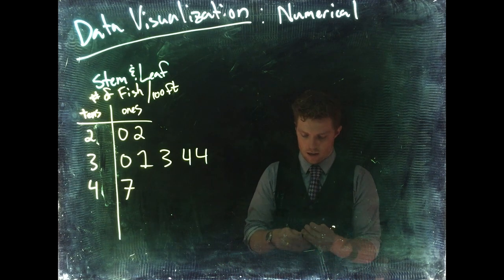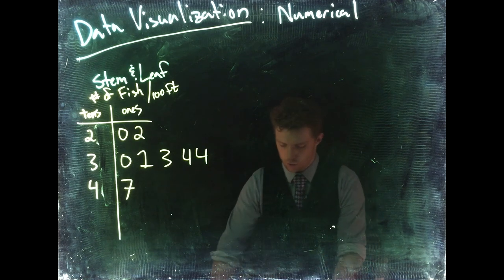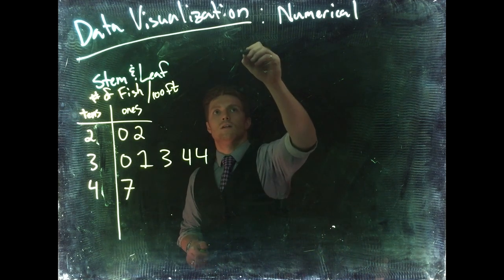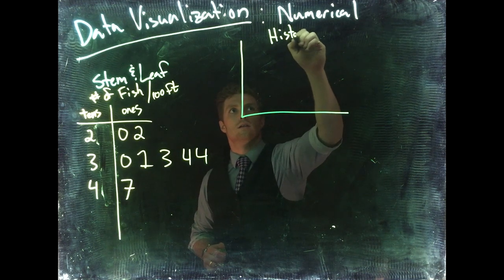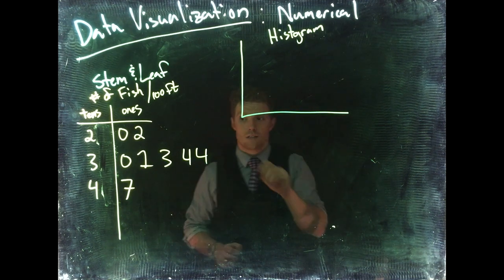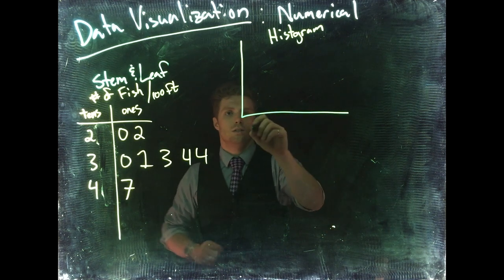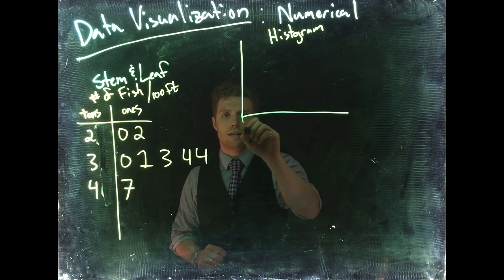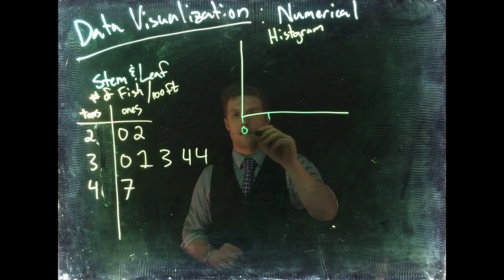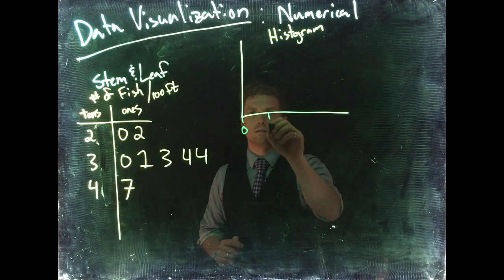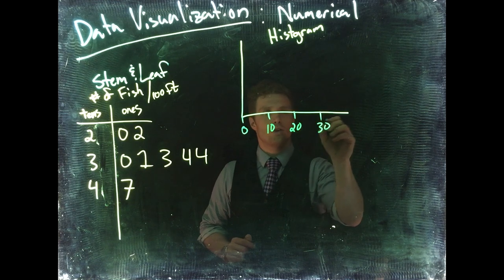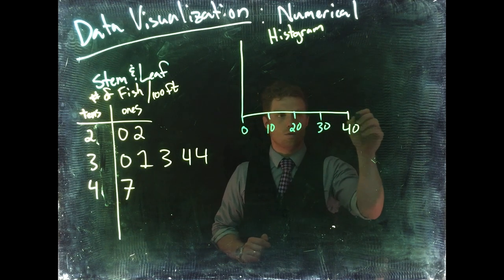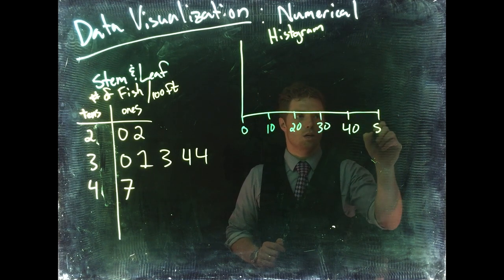That takes us to our histogram. A histogram does very much the same thing, only it's much more easily scalable. Let's make a histogram here. Let's do this again for our fish. This time we'd say okay, this is like 0, then we could go to 10, 20, 30, 40, and then 50.